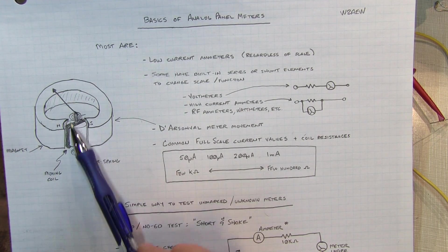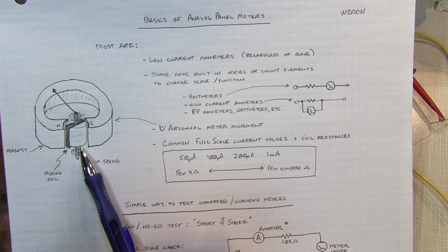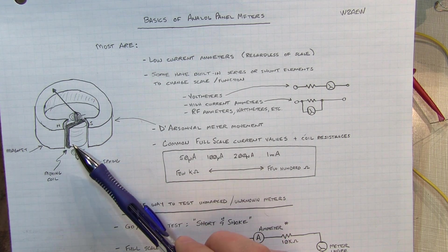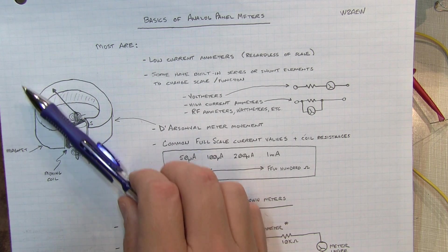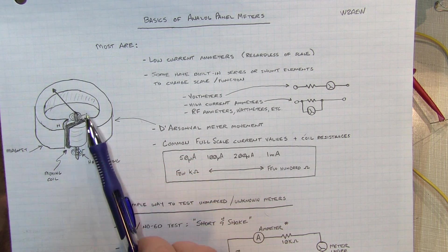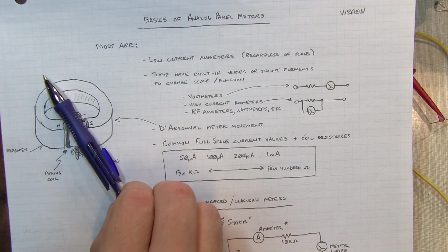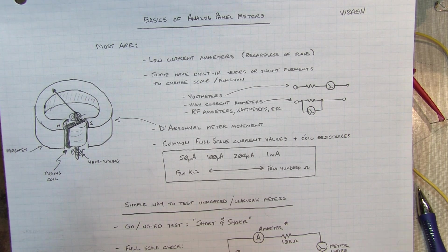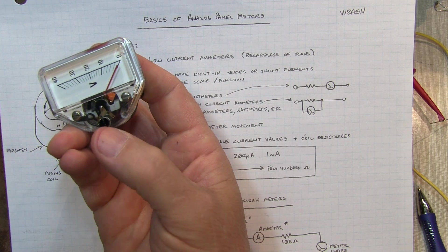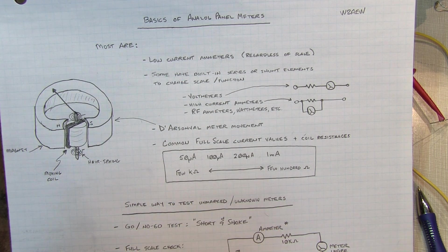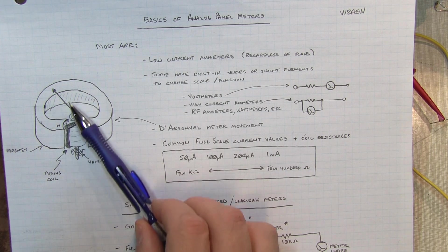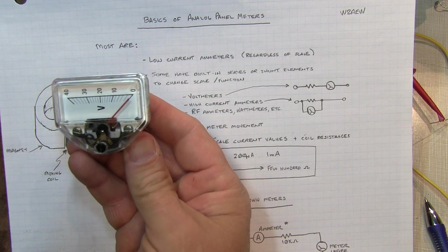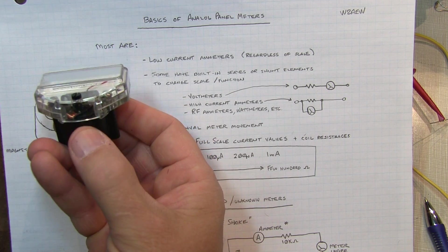Along the shaft that is holding the moving coil assembly, there's typically a small little coiled up hair spring. And that's the thing that kind of holds the meter in its zero position when there's no current flowing. And when you pass current through that coil, the force of the magnetic field is working against that spring, and that determines essentially where the meter will point for a given amount of current flowing through that coil.